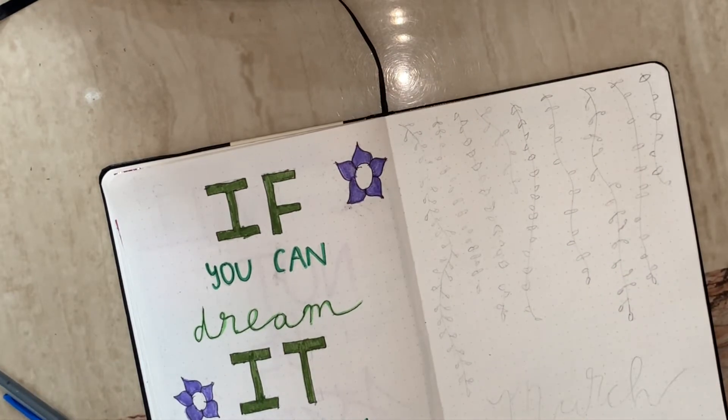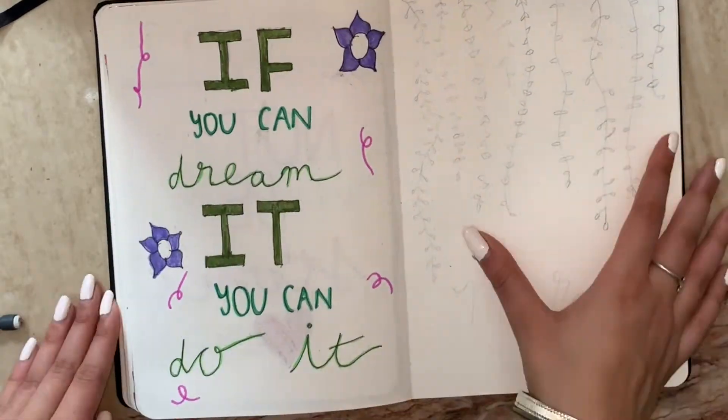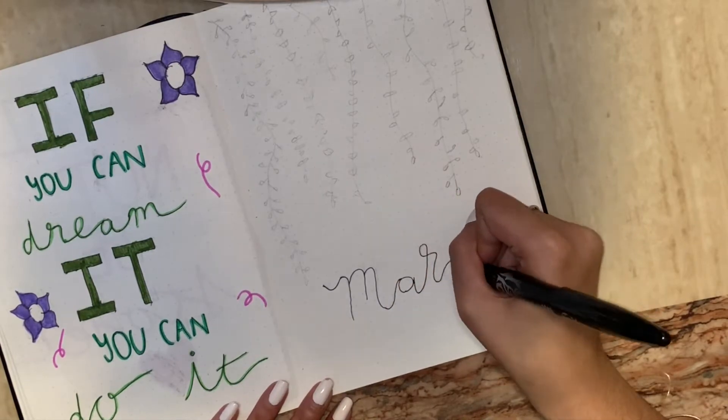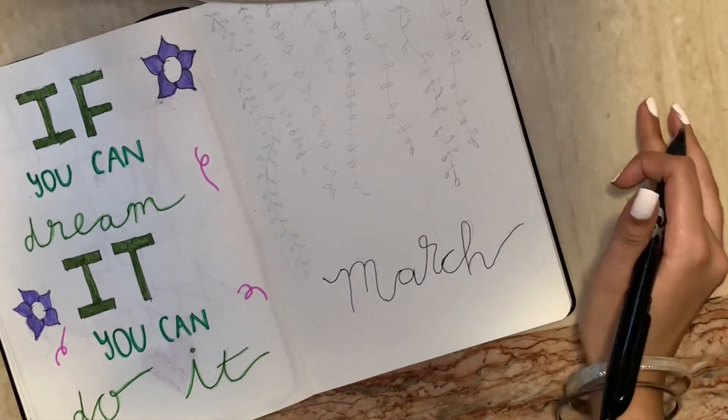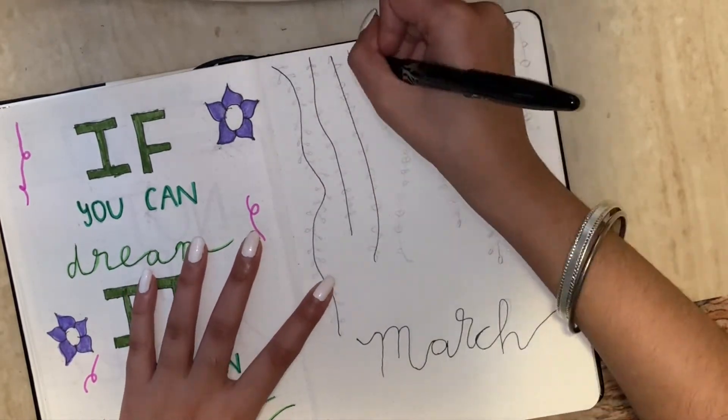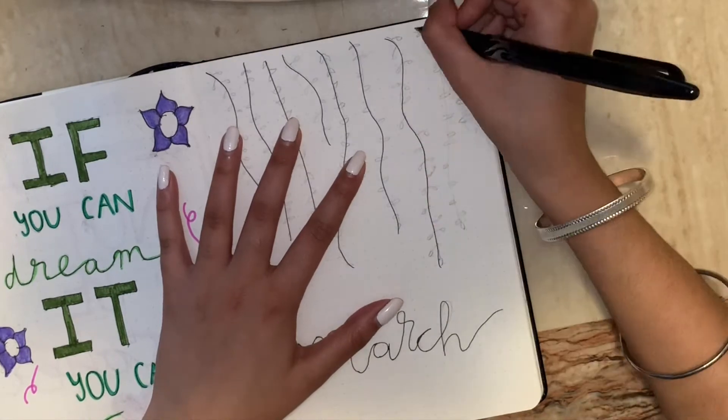Then I'm just going with a pinkish color and just adding a little doodles. Now for the next page, the March page, I'm writing March in cursive and then I'm just putting leaf lines going down which I saw on Pinterest and I thought this was very cute so I added it to my journal.